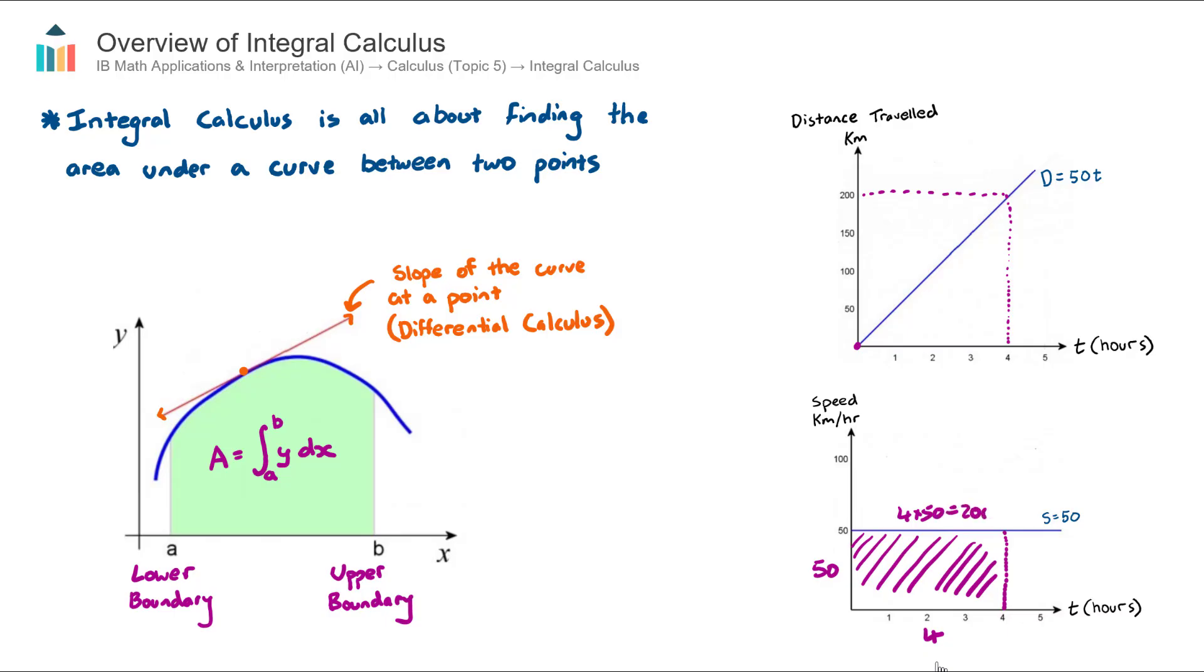Four times 50 is equal to 200. So hopefully there you can see the connection that the area under the curve of the derivative gives the corresponding y value of the anti-derivative. So this process of going from a derivative upwards, as opposed to differentiating down, going upwards is called the anti-derivative. So the area under the curve will actually correspond to the vertical axis value of the anti-derivative.